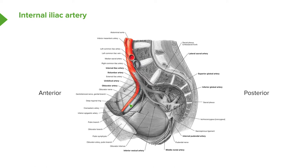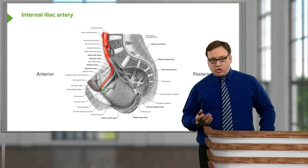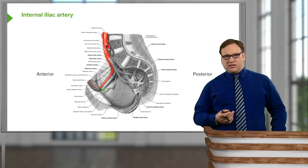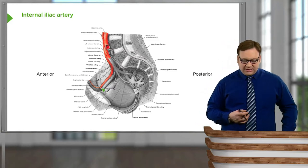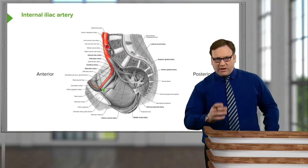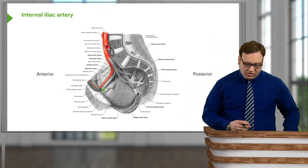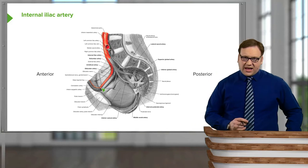Coming up from the external iliac artery, we have the inferior epigastric artery, which was important in providing arterial blood to the muscles of the anterior abdominal wall. It would anastomose with the superior epigastric artery, a branch from the internal thoracic artery in the chest. Try to remember that formation of that collateral circulation. But let's concentrate on the internal iliac artery.